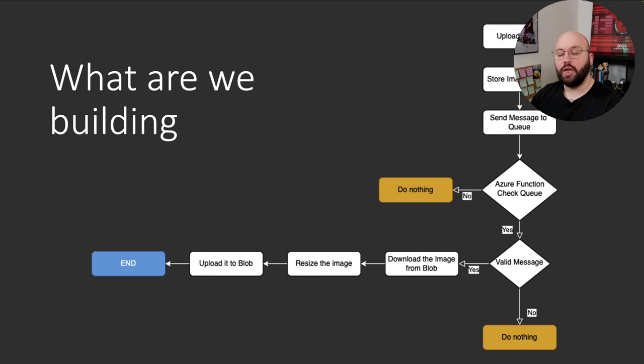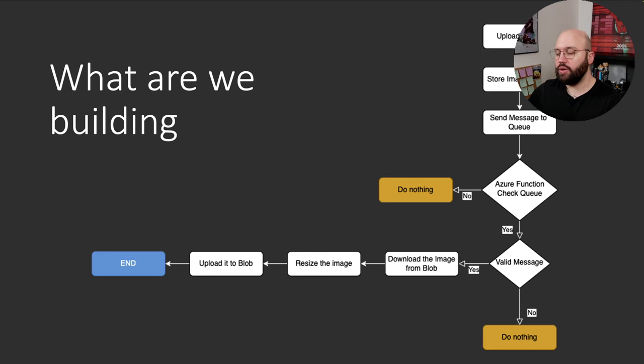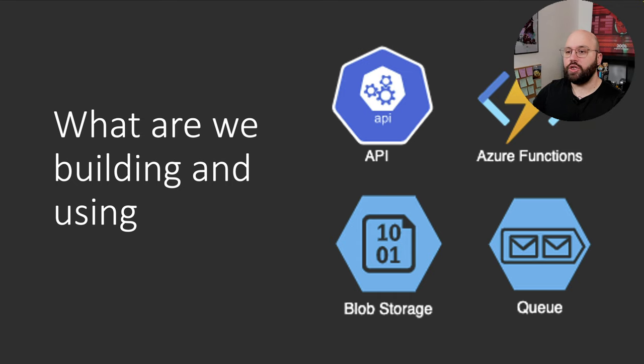Once the Azure Function picks up the message, it checks if that message is valid. If it is valid it processes it; if not, it stops processing. If the message is valid, it goes to the blob, downloads the image, and does all the resizing — because in that message we're specifying the width and height to resize to. Once resizing is finished, it uploads the image back to the blob and confirms the process is completed. At the end we'll have two images: the original and the resized one.